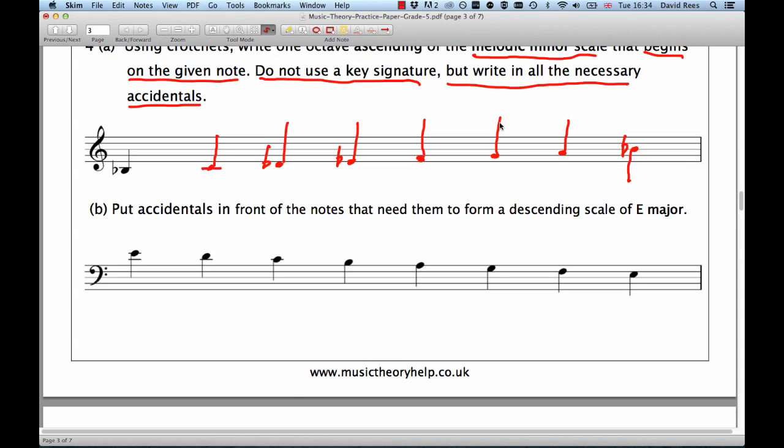Put accidentals in front of the notes that need them to form a scale of E major descending. So, fortunately, major scales are much more straightforward than minor scales. All we need to do here is just work out what the key signature would be.